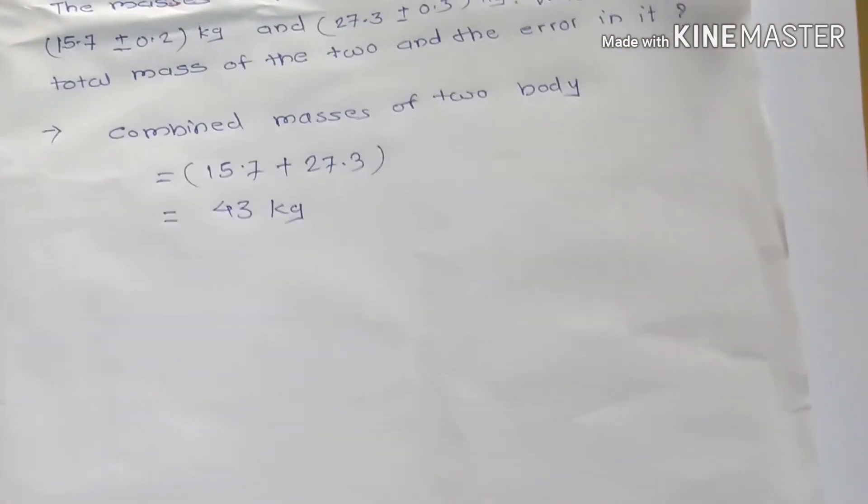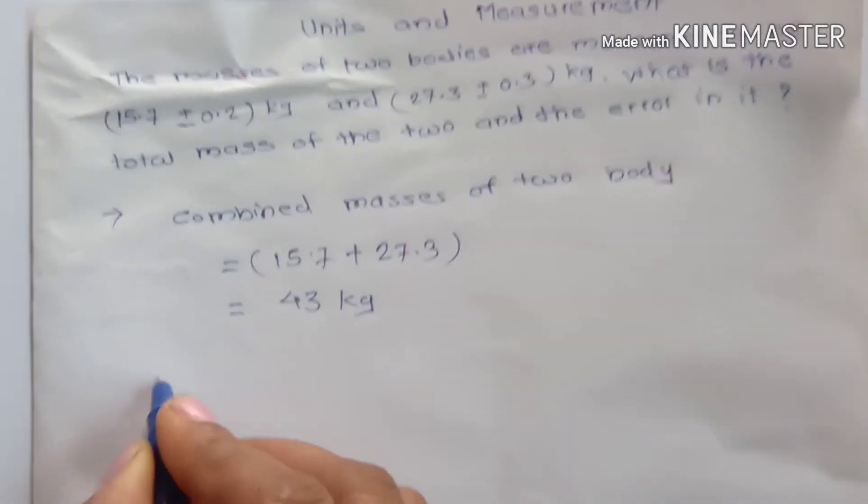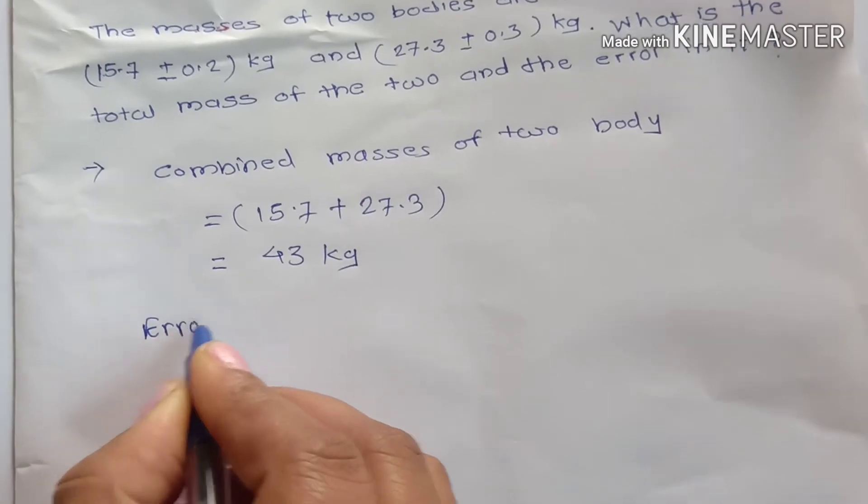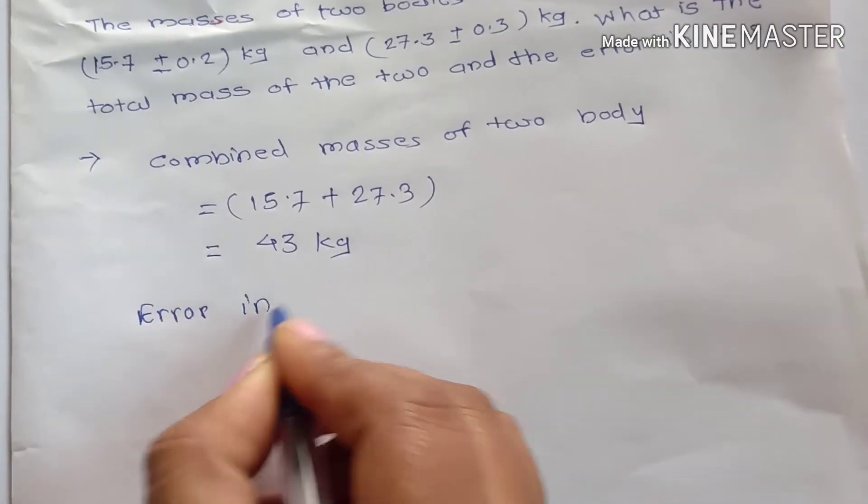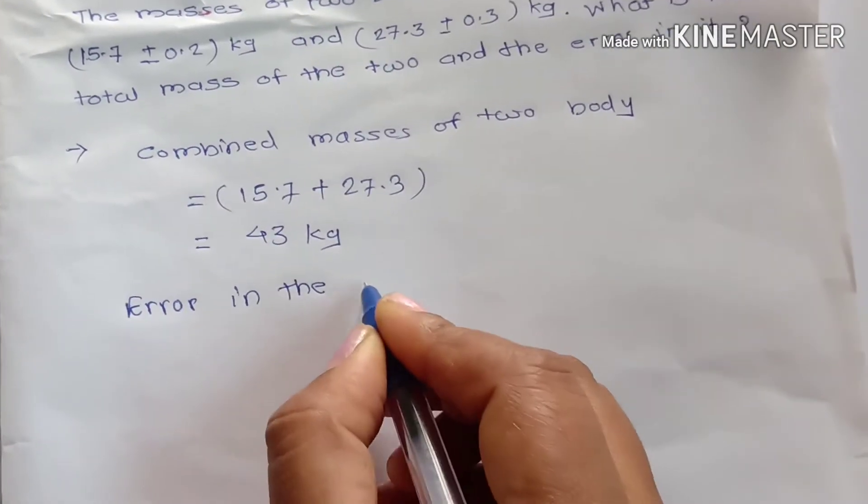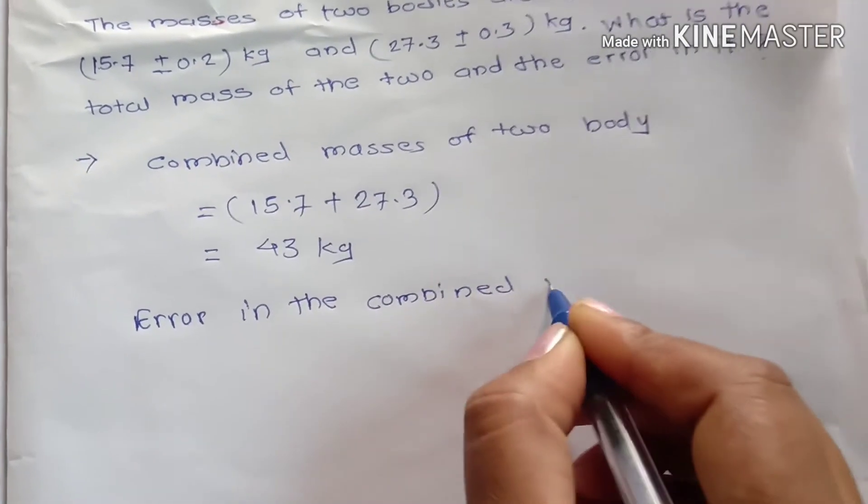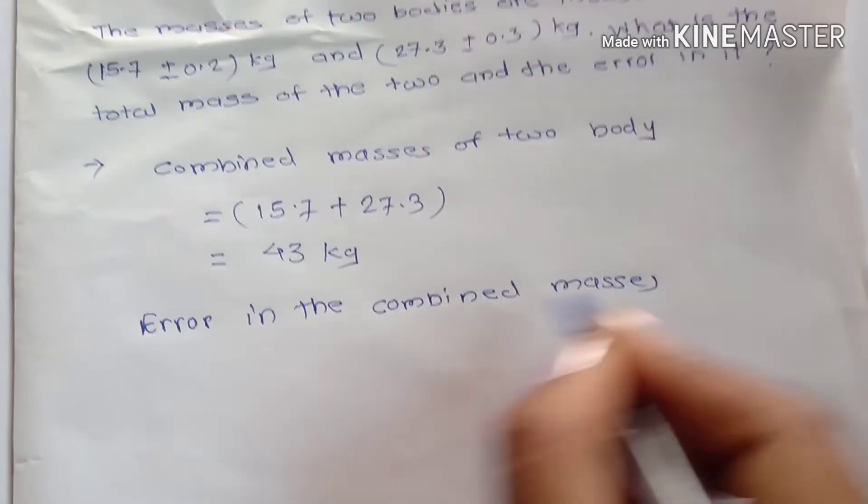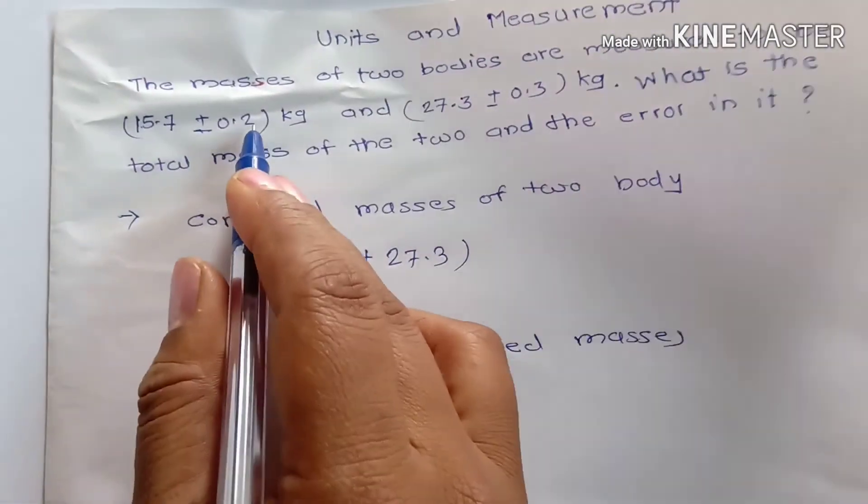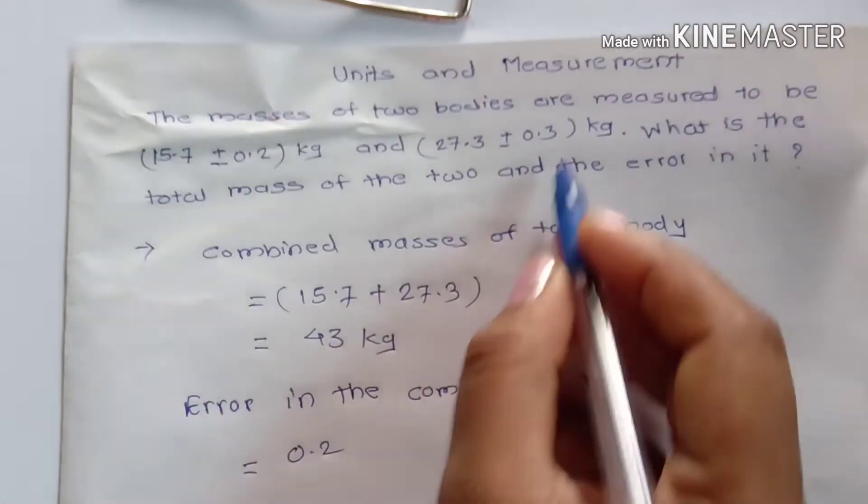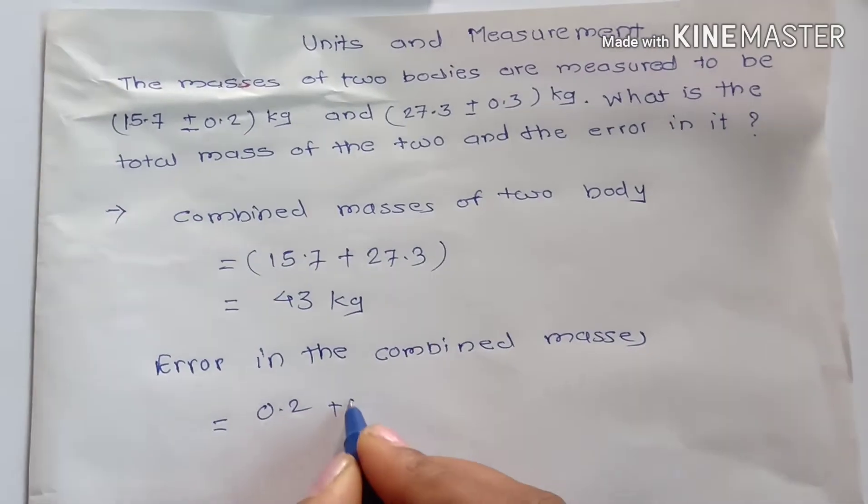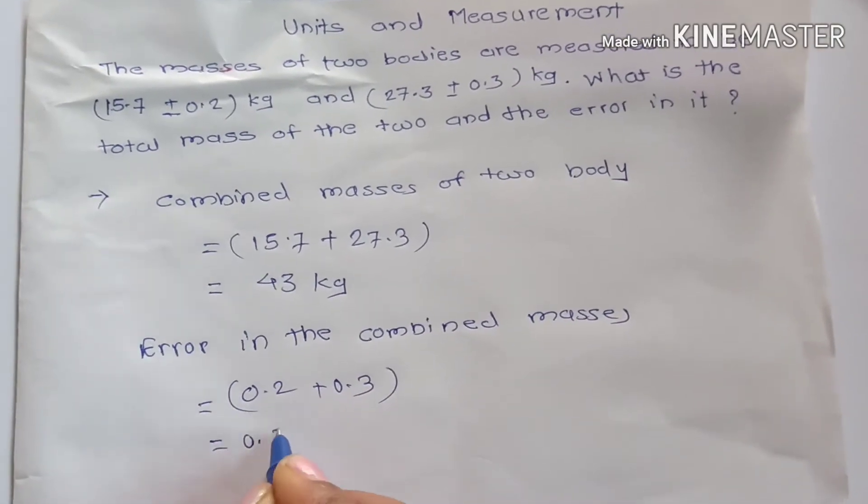Next we have to calculate error. Now the error in the combined masses are the sum of these two quantities 0.2 and 0.3. Sum of these two quantities and their answer is 0.5 kg.